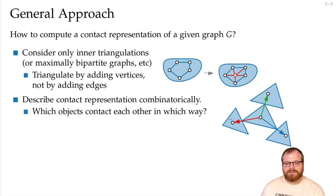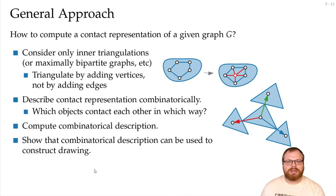For example, here, between triangles, we can have a point-edge contact, or a point-point contact, or an edge-edge contact. Now we want to compute a combinatorial description, as we have found here, and show that this description can be used to construct the drawing.